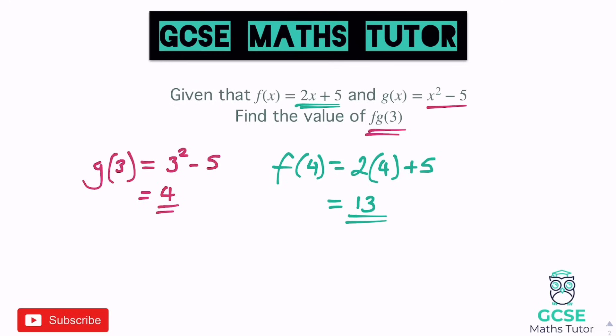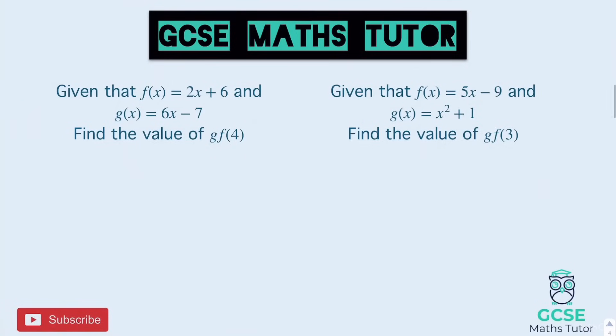So you've just got to read the fg or the gf in the order it says. So f of g(3) means the function of f when g is 3. Let's have a look at some questions for you to have a go at. Here's two questions — have a go at these, pause the video, and we'll go over the answers in a sec.